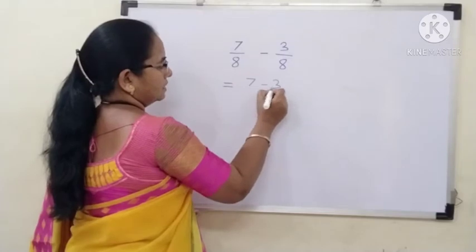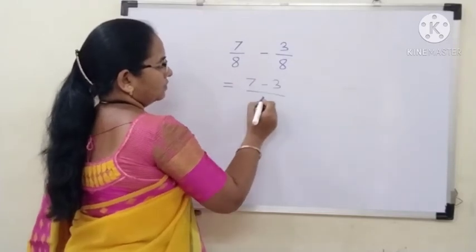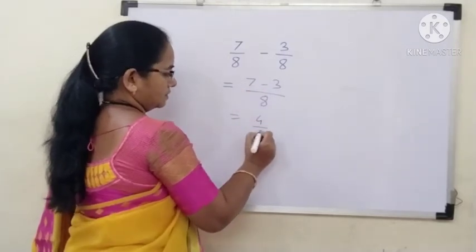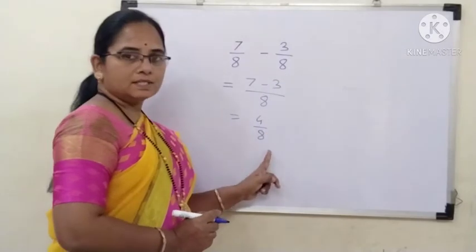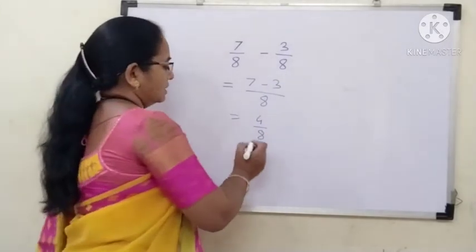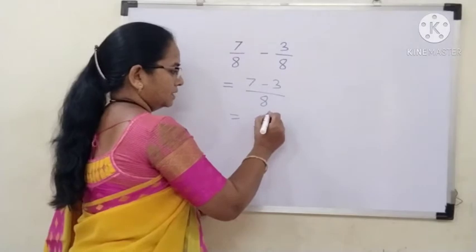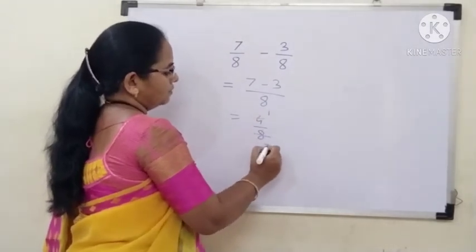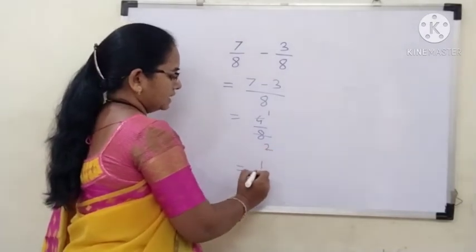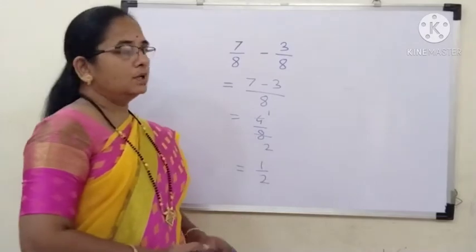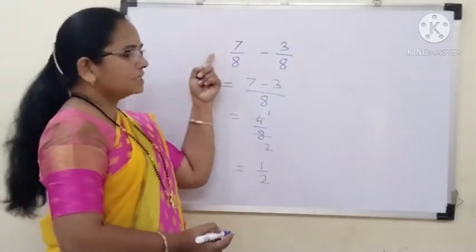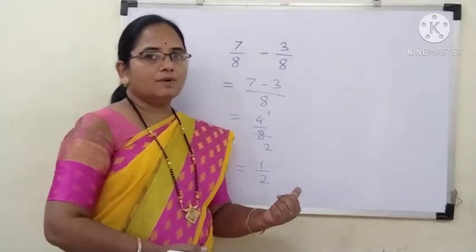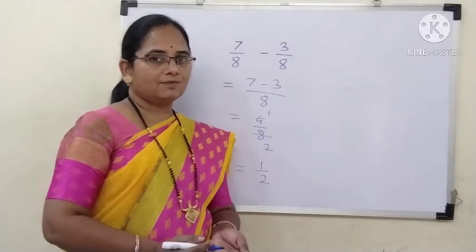7 minus 3 — write the value of the denominator as it is. 7 minus 3 is 4, so we get 4 by 8. We can find its equivalent fraction by dividing both numbers by the same number. I will divide by 4: 4 ones are 4, and 4 twos are 8. So the equivalent fraction is 1 by 2. When I subtract 3 by 8 from 7 by 8, I get the answer 1 by 2. This is an example of subtraction of 2 like fractions.